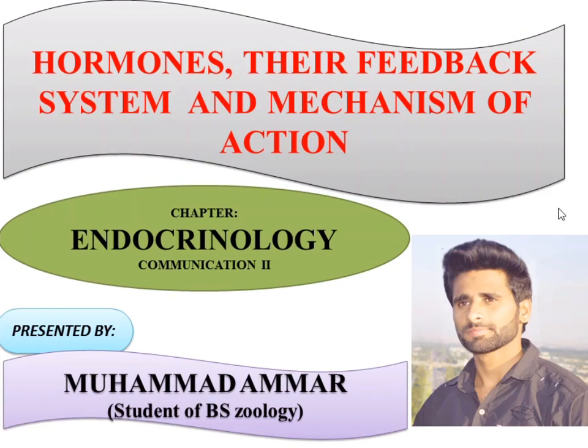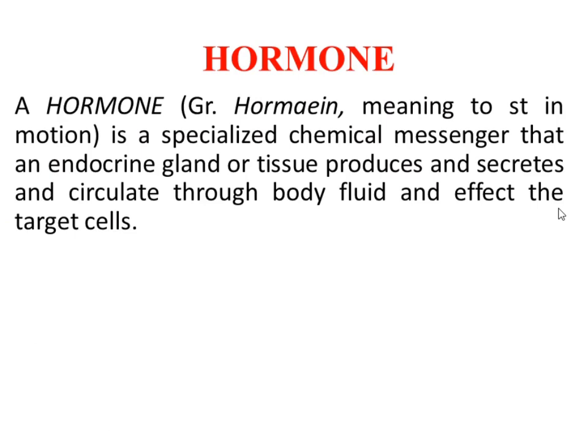What are hormones? The word 'hormone' is derived from the Greek word meaning 'to set in motion.' A hormone is a specialized chemical messenger that an endocrine gland or tissue produces and secretes. It circulates through body fluids and affects the target cells. Hormones are secreted by specialized endocrine glands or tissues, travel through body fluids such as blood, and after traveling they reach their target cells and show their effect.